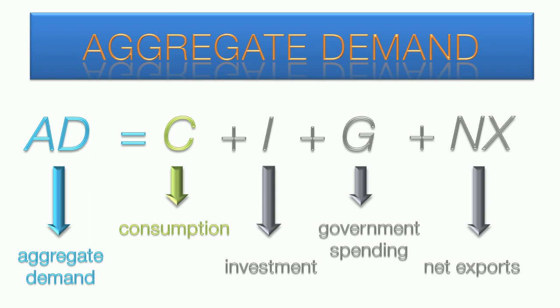Initially we will only consider changes in consumption, making investment, government spending, and net exports exogenous to our model, which we designate by putting a horizontal bar over top of them.